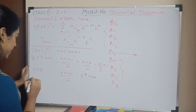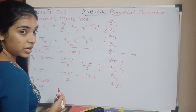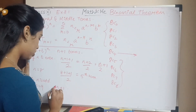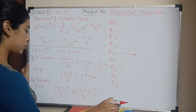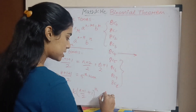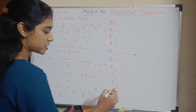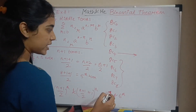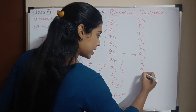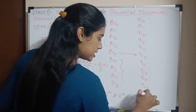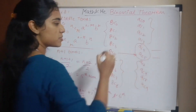If n is odd — for example n equals 9 — you have 10 terms, so there are two middle terms: the (n+1)/2 th term and the (n+1)/2 + 1 th term. For n=9, that is the 5th and 6th terms. Listing the terms: 9C0, 9C1, 9C2, 9C3, 9C4, 9C5, 9C6, 9C7, 9C8, 9C9 — 10 terms, with the 5th and 6th as middle terms, and 4 terms on each side.